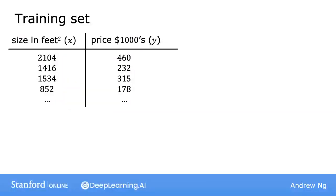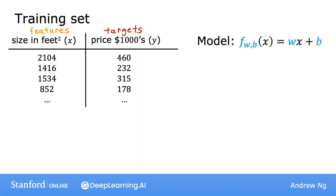Recall that you have a training set that contains input features x and output targets y. And the model you're going to use to fit this training set is this linear function f_wb of x equals w times x plus b. The w and b are called the parameters of the model. In machine learning, parameters of a model are the variables you can adjust during training in order to improve the model.